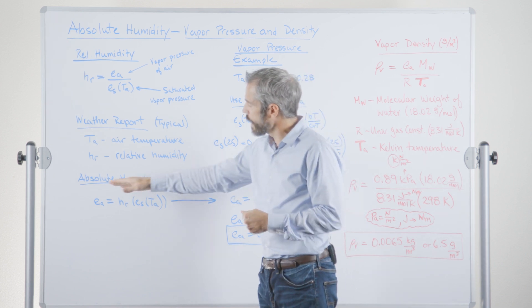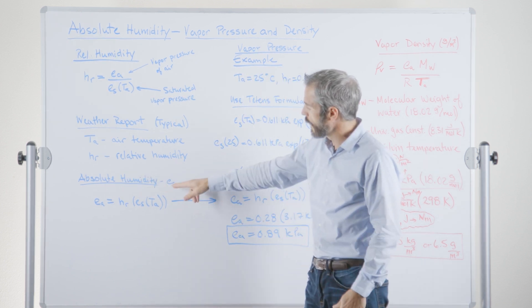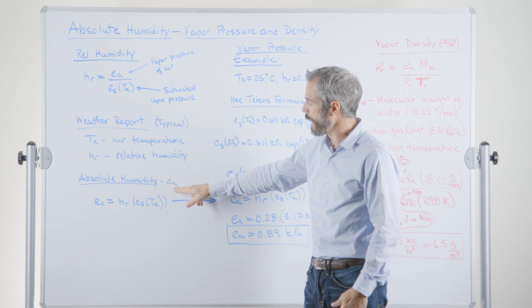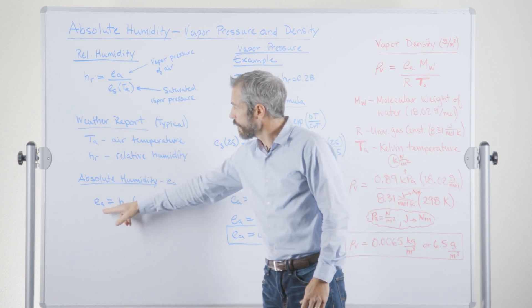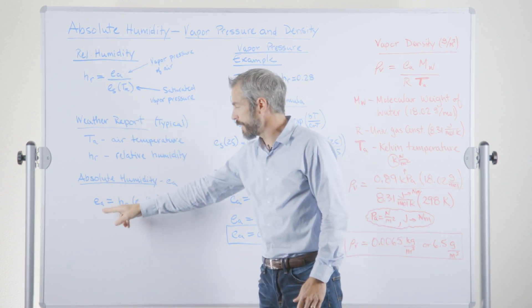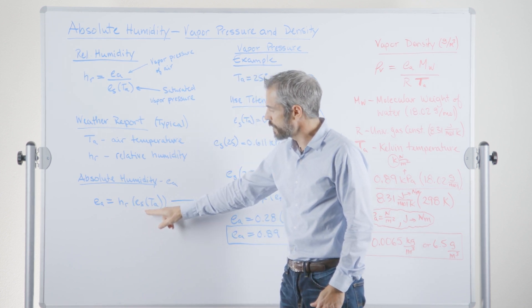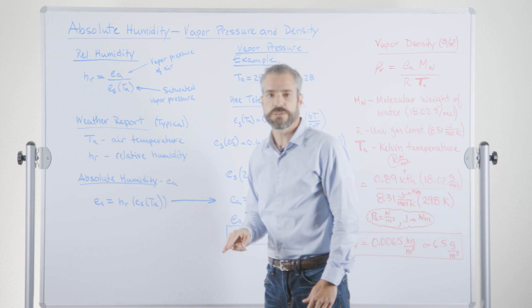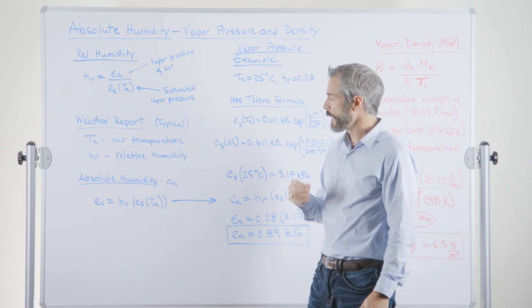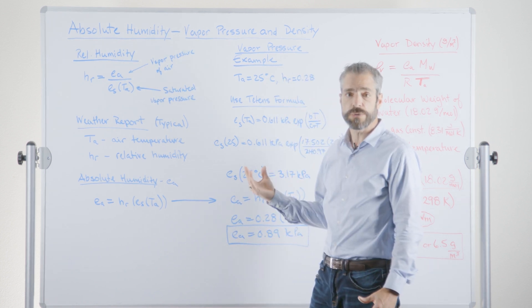So let's first talk about absolute humidity in terms of vapor pressure or this Ea. So Ea, if we rearrange this equation here, very simple math here, the relative humidity times the saturation vapor pressure, that will give us our vapor pressure. And that vapor pressure is now in absolute humidity.